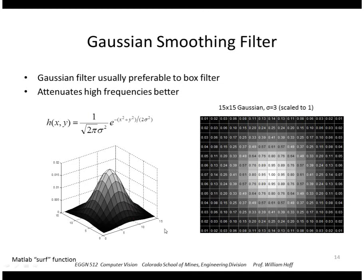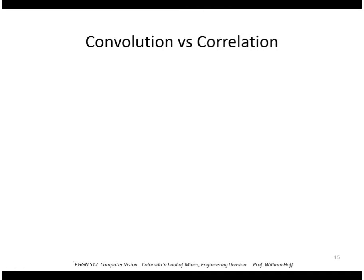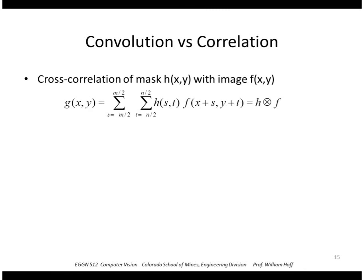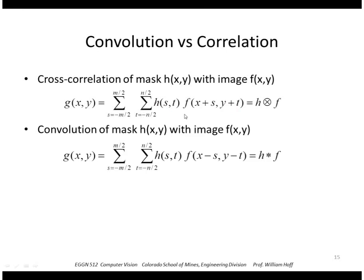I wanted to mention this other term called convolution. We often call the process, this linear spatial filtering process, convolution instead of correlation. So correlation or cross-correlation is the sum of products that I showed earlier. Namely, you take the mask, you take the image, and you offset it by s and t and multiply those terms together and add them all up. Convolution is almost the same thing, except we subtract the offset, s and t.